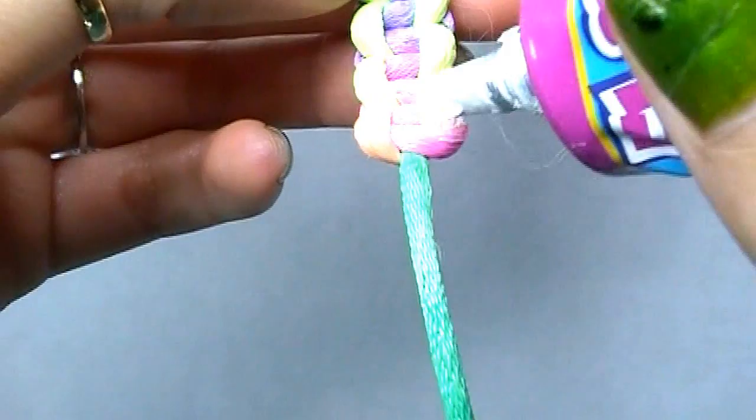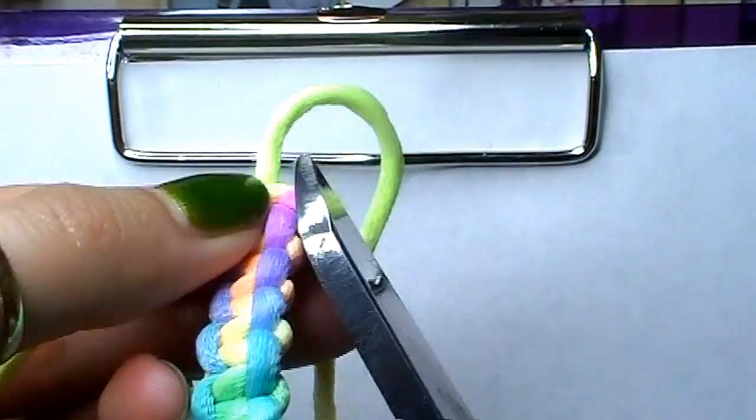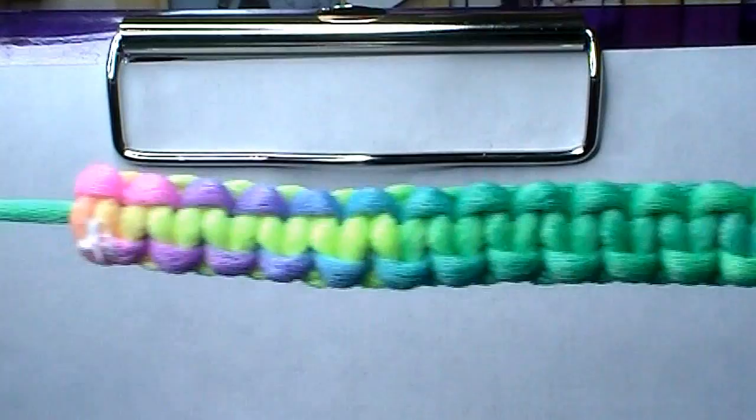Go ahead and unclip the top part, tighten both sides, cut and glue just like you did before with the bottom. Technically, you are done here and you can just tie this around your wrist, but I like to finish it off in a different way.